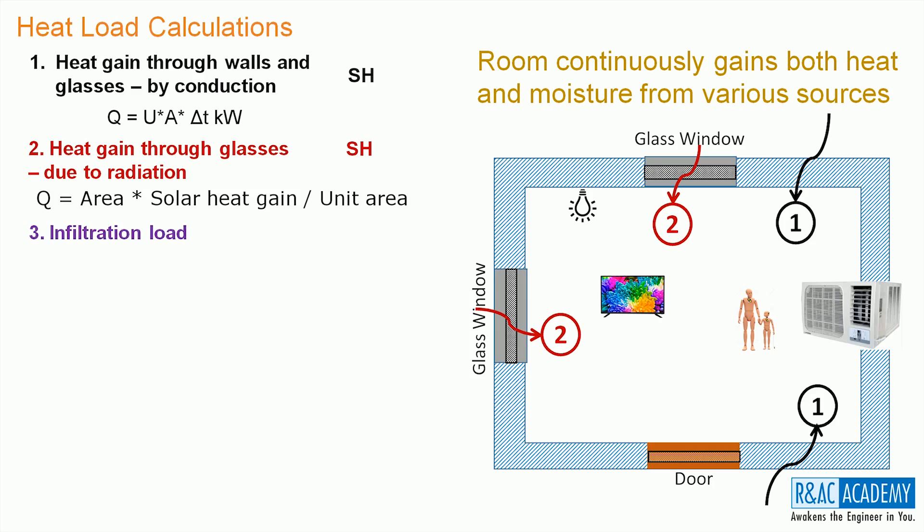The third source is infiltration load. Outside air flows into the conditioned space through the gaps and crevices around the windows and doors. The room gains both sensible heat and latent heat due to infiltrated air. First, we need to compute the infiltrated air into the room and then translate the same into latent heat and sensible heat.